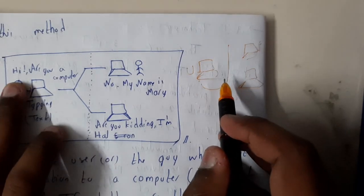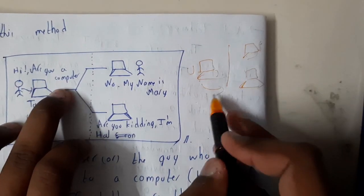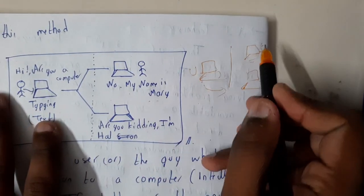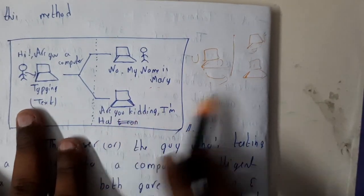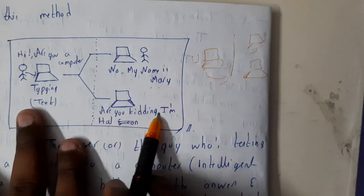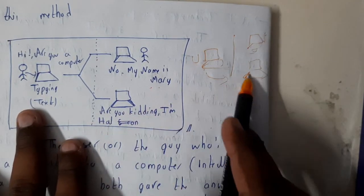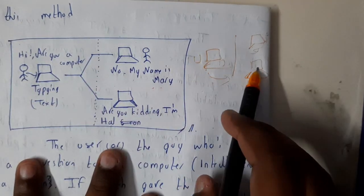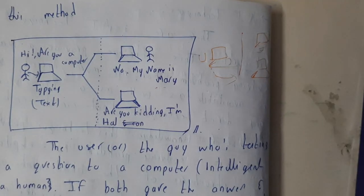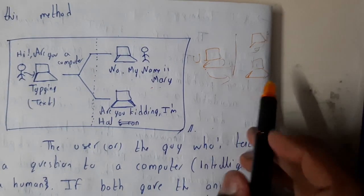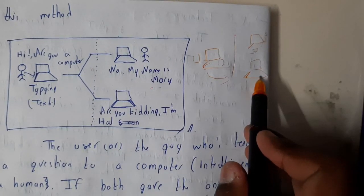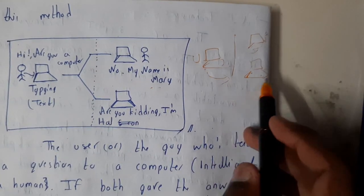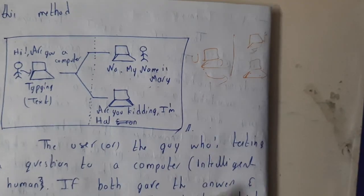You will be asking a question: what is your name, hi, are you a computer? The first person gives that answer: no, my name is Mary. Whereas the lower one, the robot, gave: are you kidding, I'm Hal. So can you judge which is the artificial intelligent device or both are humans? If you cannot judge that this is an artificially intelligent robot or anything, then this passed the Turing Test and this device we can say is artificially intelligent.